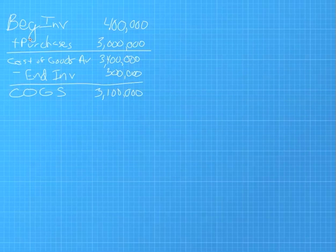So I made it a little smaller here. In our sample, our beginning inventory was $400,000 for the pharmacy. We had $3 million in purchases. Our cost of goods available then for purchase would be $3.4 million. At the end of the period, we had $300,000 in inventory left over, in ending inventory, giving us a cost of goods sold for the period of $3.1 million.